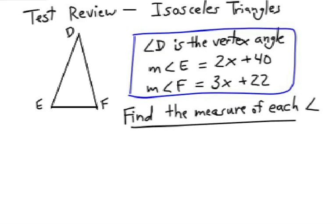Well, the first idea of course is to make sure you mark up what they give you and it looks like measure of angle E is 2x plus 40. Measure of angle F is 3x plus 22.